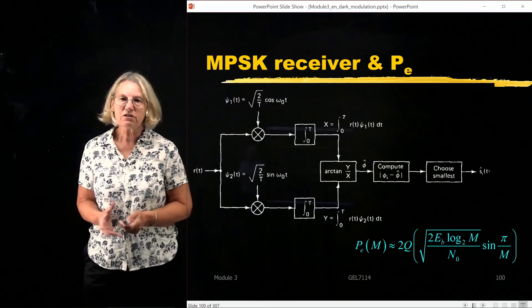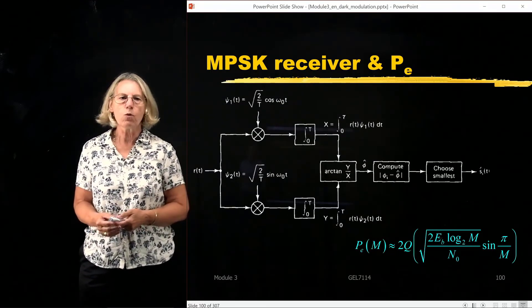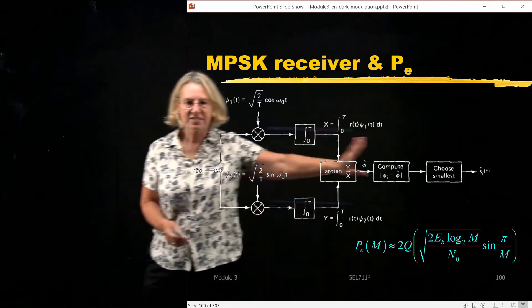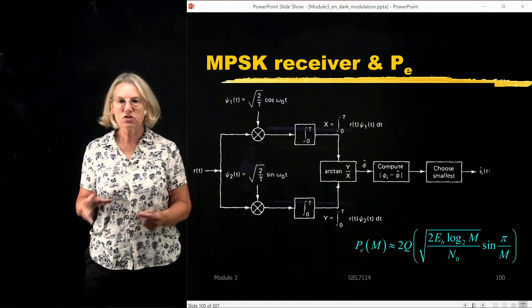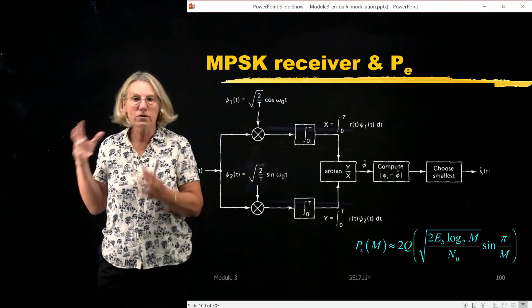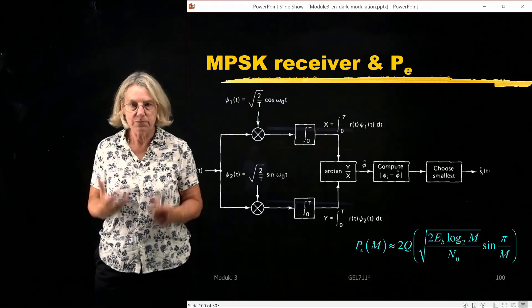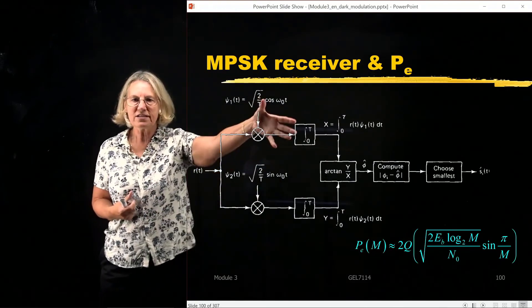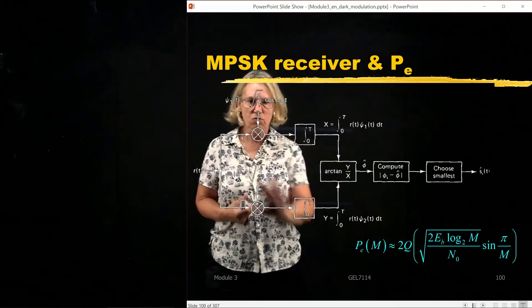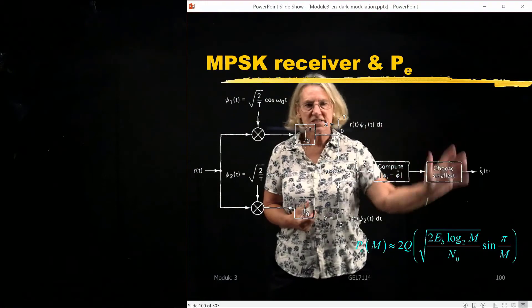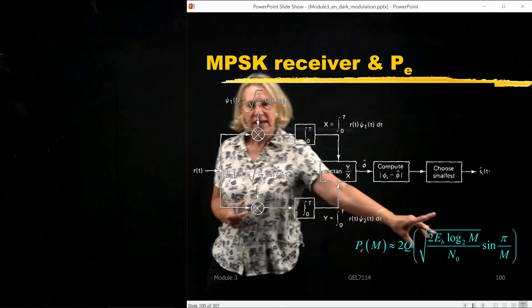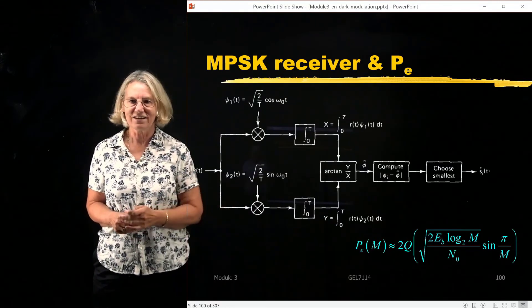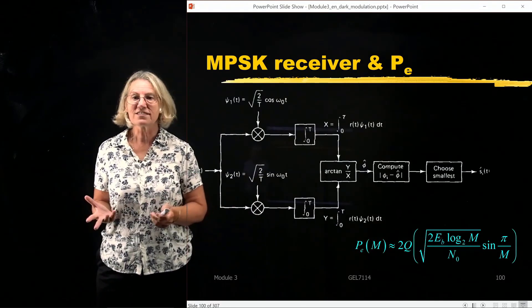Now, the receiver structure we've already seen as an example before would take this arctangent and then we would put a slicer afterwards to choose which one was the symbol transmitted. And this now is the other part of the information we need. So here is the form of the receiver. Here is the decision algorithm. And now we have the last part which tells us the performance of this communication system.